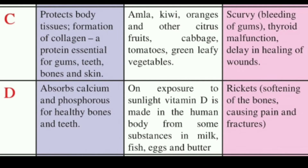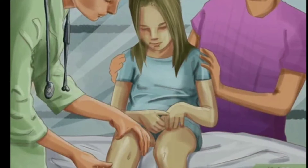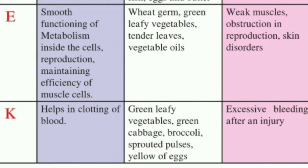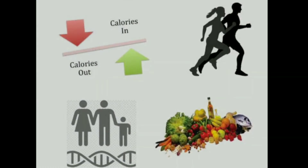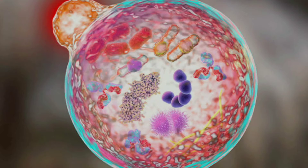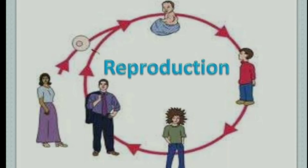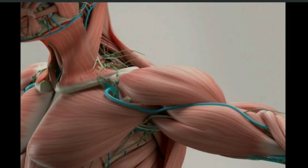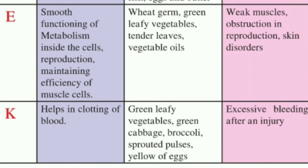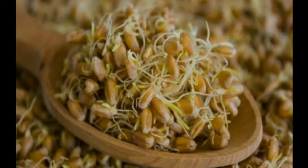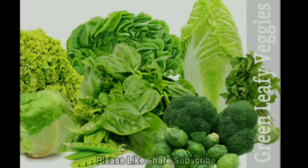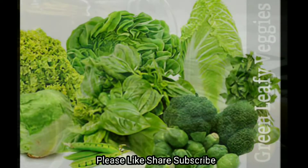Deficiency disease of Vitamin D: rickets — that is, softening of the bones, causing pain and fractures. Vitamin E helps in smooth functioning of metabolism inside the cells, reproduction, and maintaining efficiency of muscle cells. Sources: wheat germ, green leafy vegetables, tender leaves, vegetable oils.